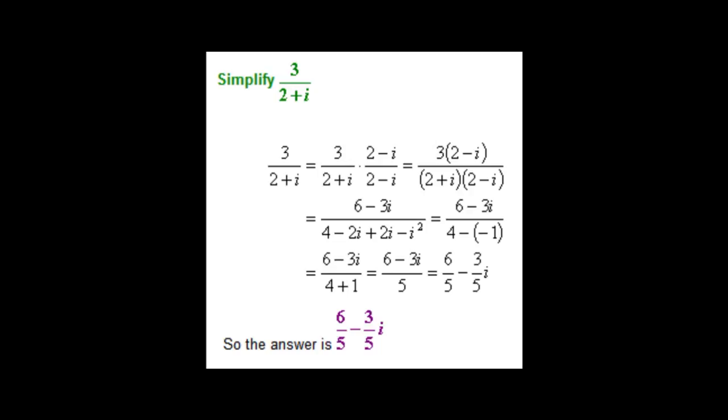After multiplying by the conjugate, you may notice that what you get is a difference of two squares. You will end up with 4 minus i squared in the denominator, which becomes 4 plus 1, which is 5. The answer is not 6 minus 3i over 5 because it must be expressed in the form of a plus bi. 6 minus 3i over 5 is equal to 6 over 5 minus 3 over 5i.